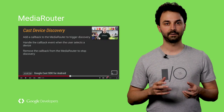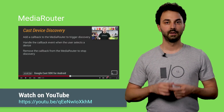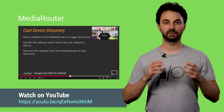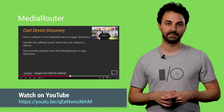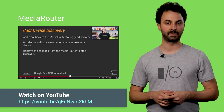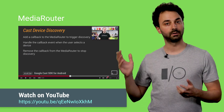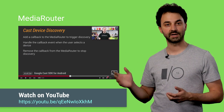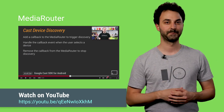The Media Router APIs let you discover available Cast receivers. Remote Display works the same way as any other Cast-enabled app in this respect, and we have a great video on the Google Developers channel about discovery. Check it out.